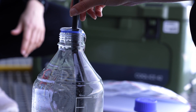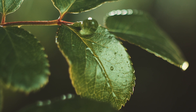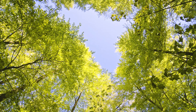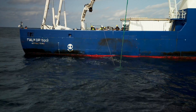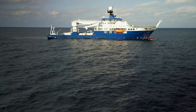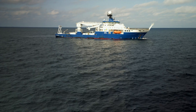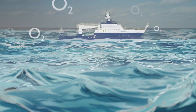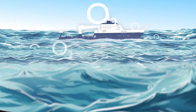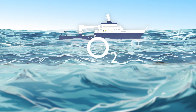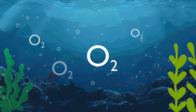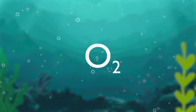While most of us are familiar with how oxygen is produced on land through photosynthesis by plants, algae and trees, oxygen enters our ocean via three main processes. Number one: the surface of the ocean mixing with the atmosphere and exchanging gases through wind, waves and currents.